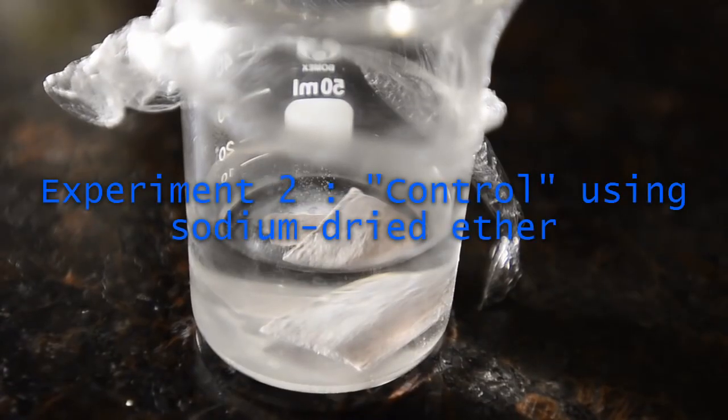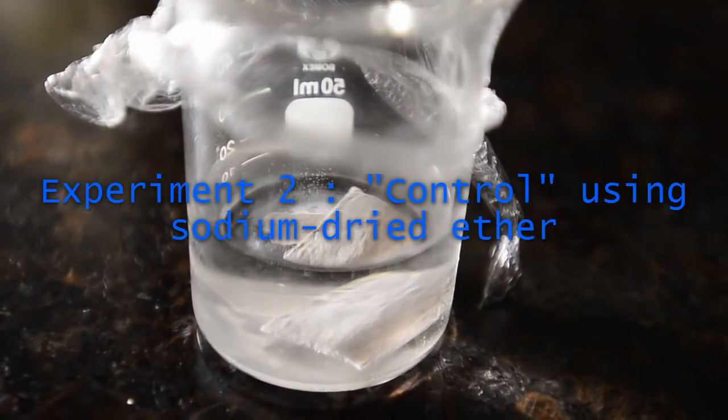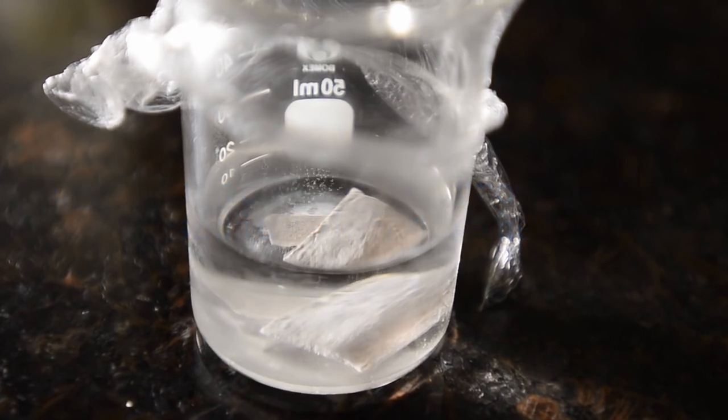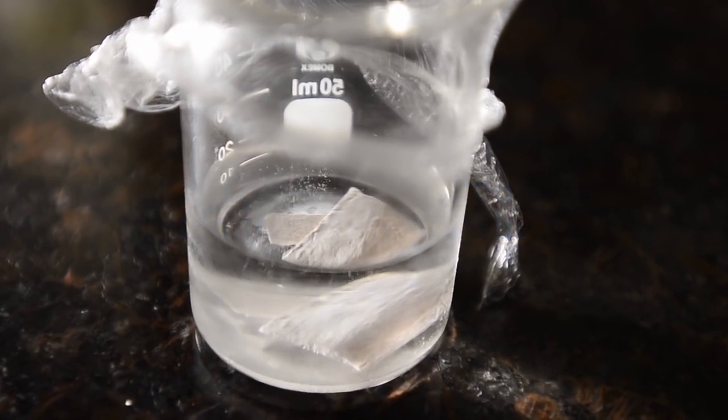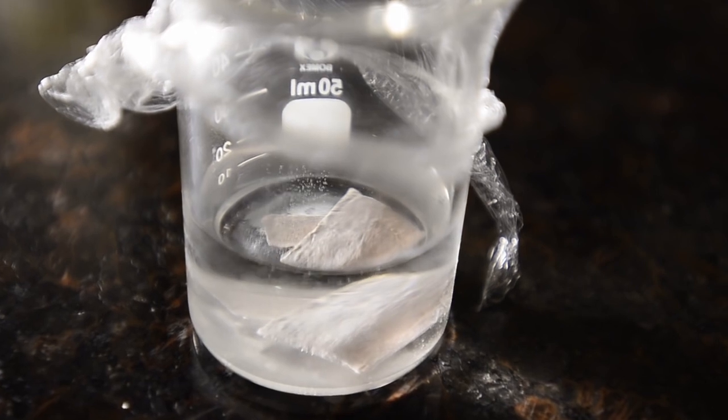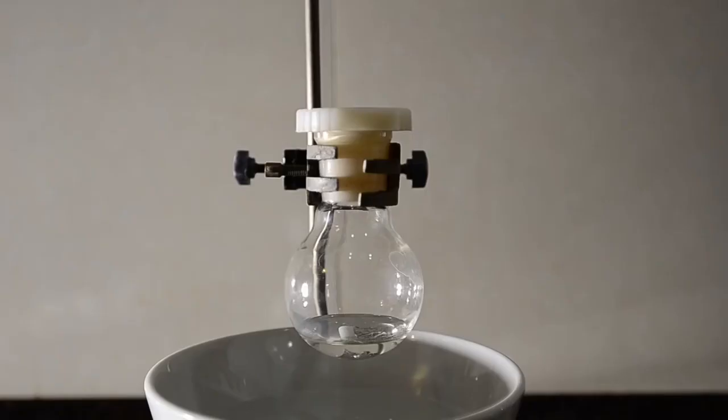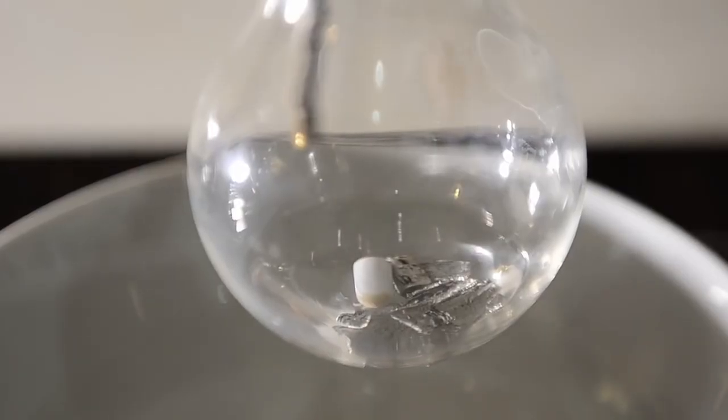Next we did a control experiment where we thoroughly dried ether using a few small slivers of sodium metal. You can see from the hydrogen bubbles that the ether does contain some water. We then did everything in exactly the same way as before.